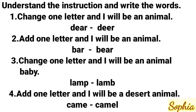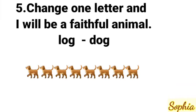Number three: Change one letter and I will be an animal. L-A-M-P — lamp changed to L-A-M-B, lamb. Number four: Add one letter and I will be a desert animal. C-A-M-E-L — camel. Number five: Change one letter and I will be a faithful animal. L-O-G — you change to D-O-G, dog.